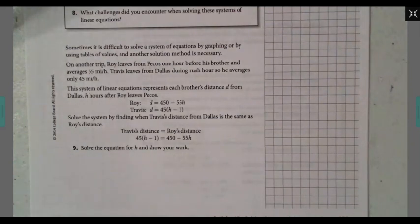On another trip, Roy leaves from Pecos one hour before his brother and averages 55 miles an hour. Travis leaves from Dallas during rush hour so he averages only 45 miles an hour. The system of linear equations represent each brother's distance d from Dallas h hours after Roy leaves Pecos.